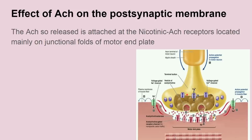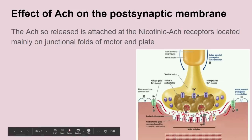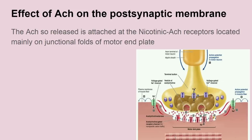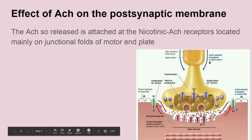The released ACh in the synaptic cleft mainly causes an effect on the postsynaptic membrane. The acetylcholine diffuses across the synaptic cleft and binds to the nicotinic receptor located near the junctional folds of the motor end plate on the postsynaptic membrane.